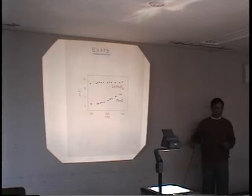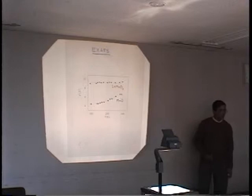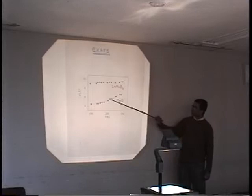No Jahn-Teller distortion. And you find that the sigma squared, which is the root mean squared disorder parameter, shows a monotonic decrease with temperature.